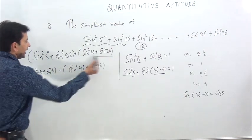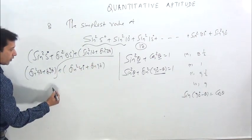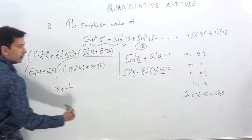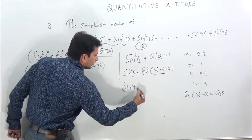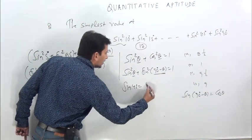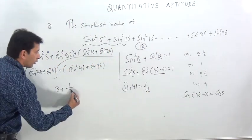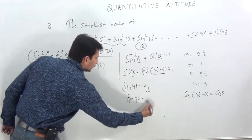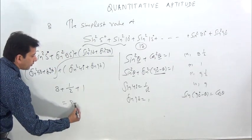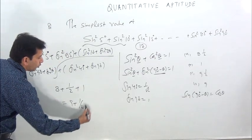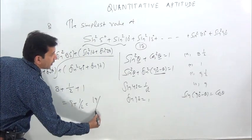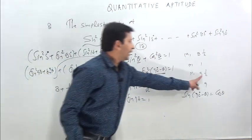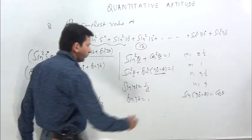Out of 9 pairs, 8 pairs each give a sum of 1, so that is 8. sin²45° = (1/√2)² = 1/2. sin²90° = 1² = 1. So the total is 8 + 1/2 + 1 = 9 + 1/2 = (18+1)/2 = 19/2. As you can see written here: 18+1 = 19/2. Right?